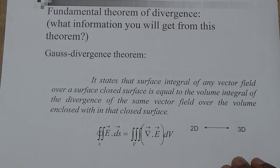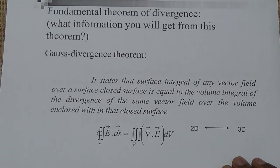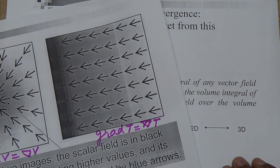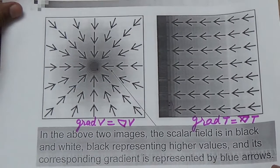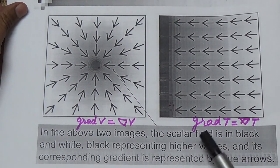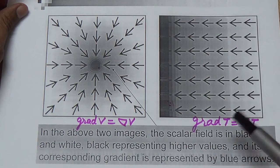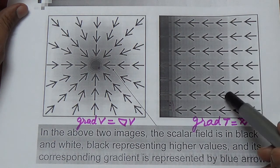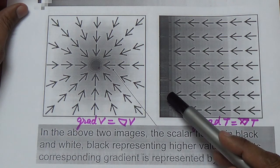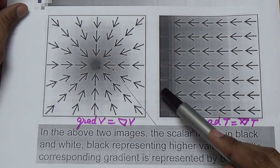After the discussion of gradient, divergence, and curl, we have seen in the last lecture how to interpret the physical meaning of gradient, divergence, and curl. We have seen the meaning of the gradient operator when it operates on the temperature field, which is a scalar field. It gives a vector quantity that indicates the direction towards the maximum change, towards the higher point.